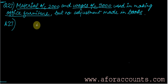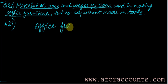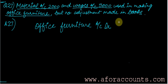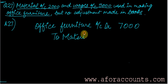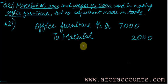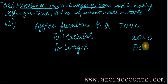This is a simple entry. Asset accounts are always debited, so office furniture account is debited. No adjustment has been made, so office furniture account debit by ₹7000 (5000 + 2000). Material account credited by ₹2000 and wages account credited by ₹5000. A very simple entry.